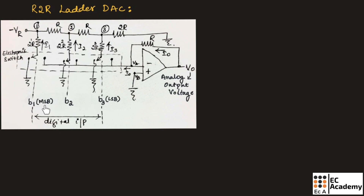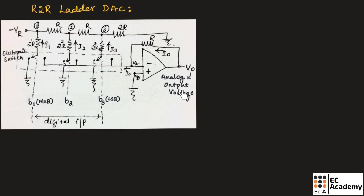This figure shows the 3-bit digital data circuit. Here the electronic switch is either connected to the inverting terminal or it is connected to ground depending upon the type of bits we are using. If bit B is equal to 0, this electronic switch will be connected to the ground, and if bit B is equal to 1, this electronic switch is connected to the inverting terminal so that it can receive the reference voltage VR. The non-inverting terminal is connected to ground and V0 is the analog output voltage.